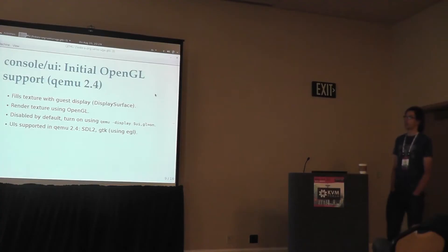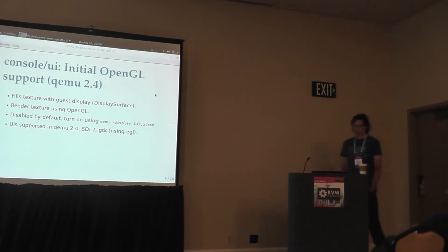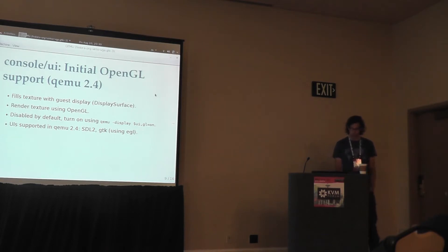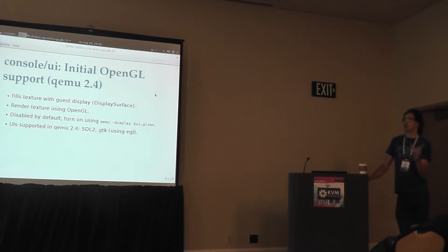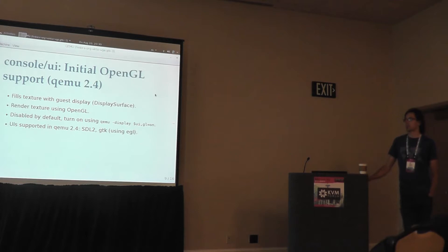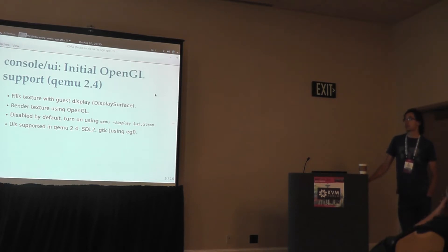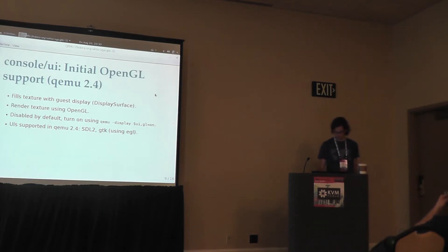On the user interface side, what has already been merged in QEMU 2.4 is rendering the normal guest display — which is represented inside QEMU as a display surface structure — using OpenGL. QEMU will simply copy the guest display to a texture and then render that using OpenGL. It's still disabled by default, but you can enable it with 'gl=on' on the QEMU command line. It's supported with SDL2 and also with GTK. That's the very first OpenGL bits which are actually upstream already.